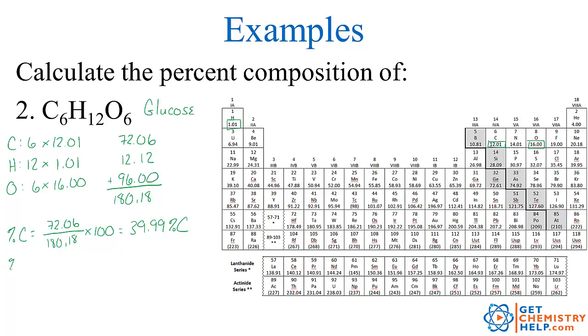How about the percent of hydrogen? The total mass of all 12 hydrogens was right here, 12.12, divided by the total mass of the entire compound, 180.18, and again, times 100 because it's a percentage, so it's 6.727% hydrogen.